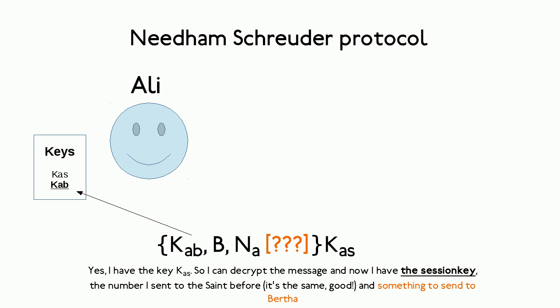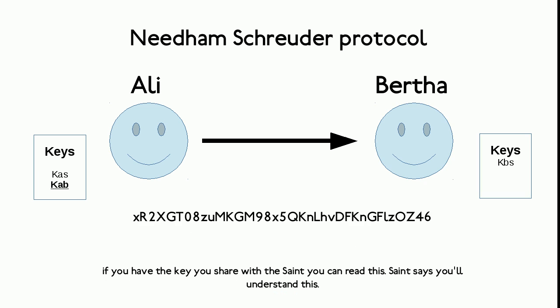Ali now extracts the part he could not read and sends it to Bertha. Ali has no way of finding out what is in that message. The only thing he knows for sure is that The Saint sent this to him, and he trusts The Saint.